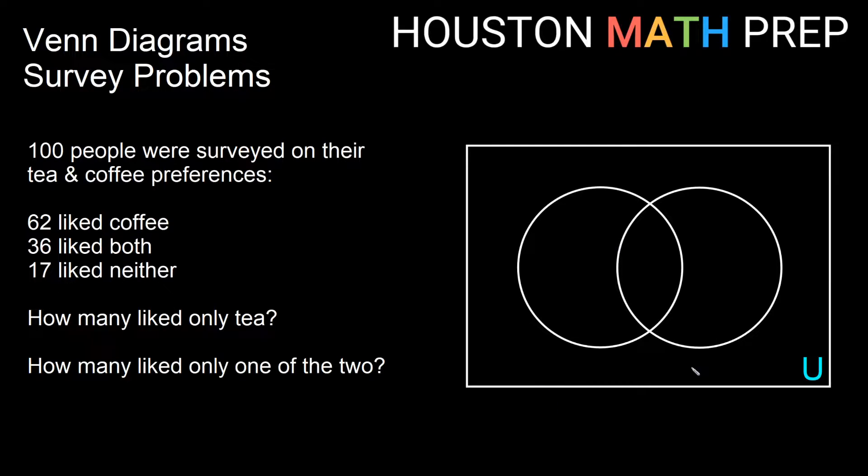Let's go ahead and set up our diagram. I've got my universal set, which will be all 100 people fit in here somewhere. And since we know that the survey was about tea and coffee, I'm going to label this circle T or tea, and then C for coffee. You could label them A and B, but I'm going to label them T and C just for clarity here.